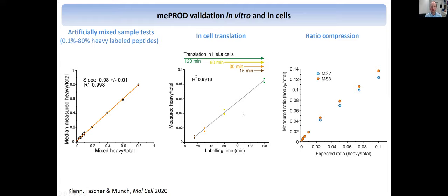So we were at a point where we could use this method quite robustly in cells. And just because I mentioned ratio compression with TMT — it turns out, because of us also having this noise channel to determine the background, we actually don't need to measure an MS3. That's an extra measurement step that costs time and we lose some sample. MS2 performed just as well as MS3, so we have no need to shoot with an MS3 method.